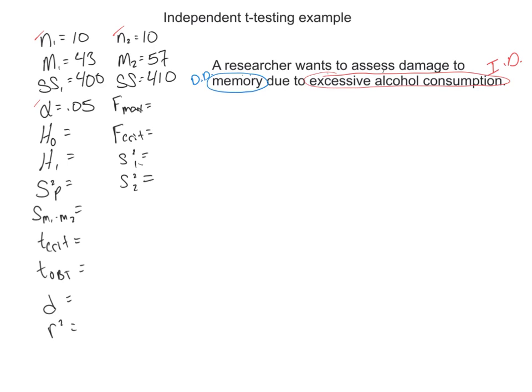A researcher wants to assess damage to memory due to excessive alcohol consumption. Damage is the key word here. That could be no damage, less than no damage. They could have a better memory, they could have a worse memory. They just want to see the difference, the damage or the impact, basically, is what they're saying. So this is a two-tail test.